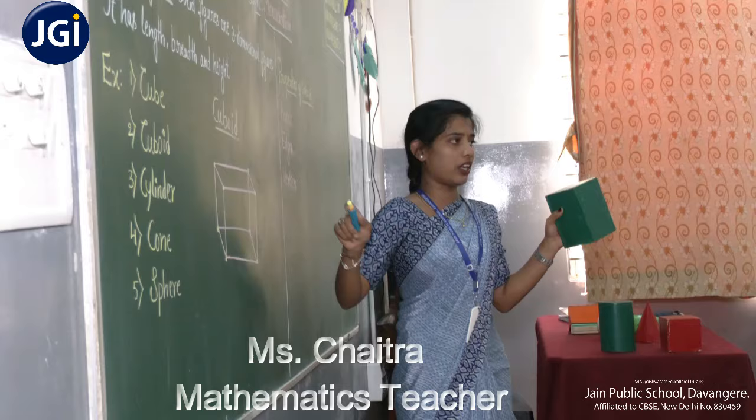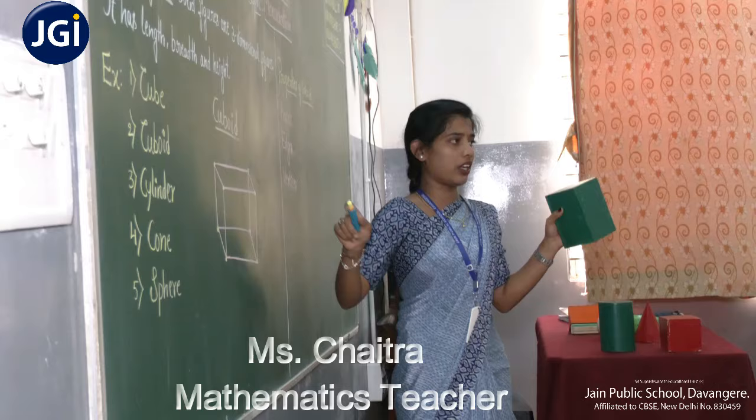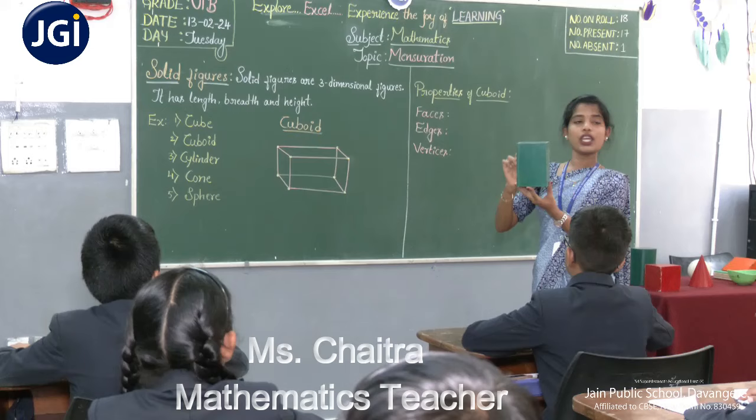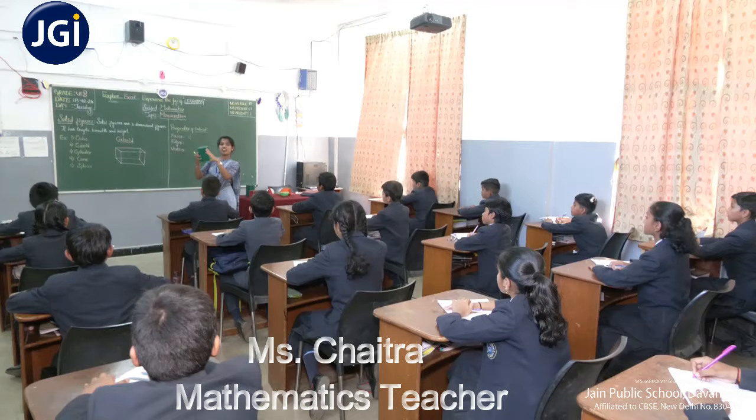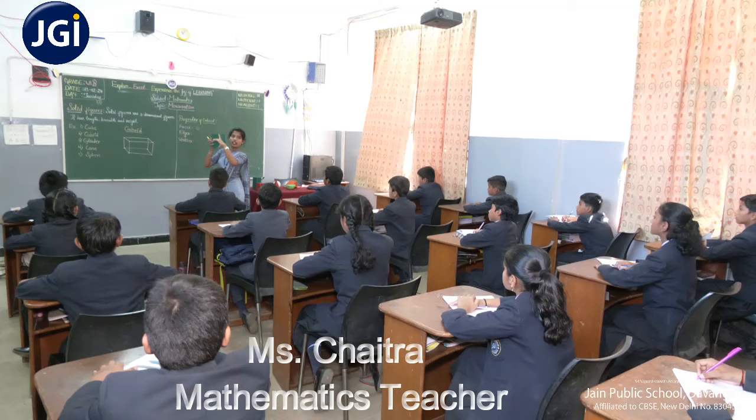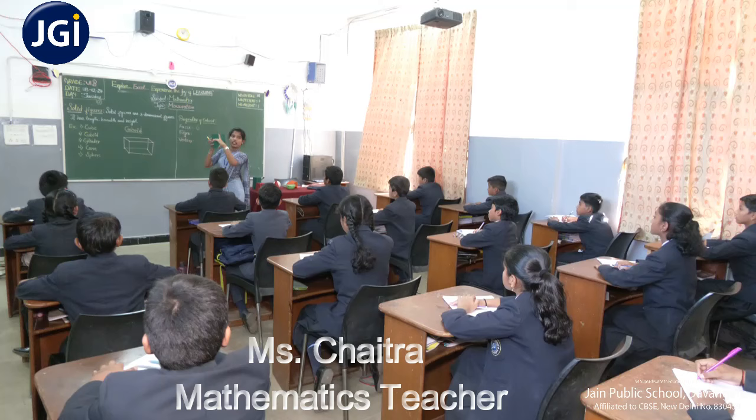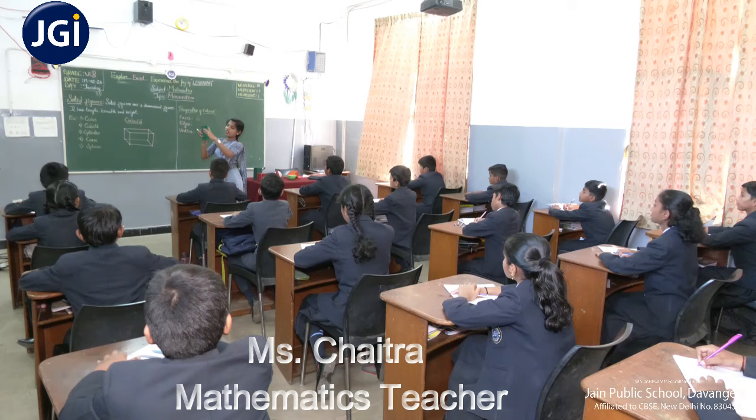Now, the figure of a cuboid. The properties of a cuboid: it has edges — edges are the lines that join together at the corners of the surface of the given shape. This is the cuboidal shape, and these are its edges.